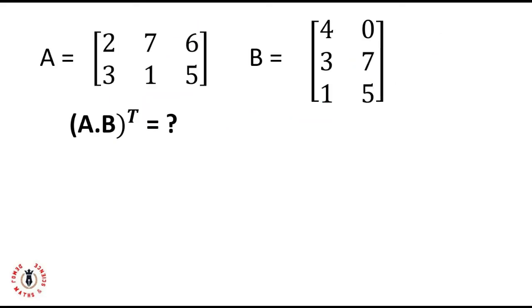Let's take this example. For this question, I have to transpose the product of A and B. First, let's find the product of A and B. Matrix A is a 2 by 3 matrix and matrix B is a 3 by 2 matrix. These two matrices can multiply each other because the number of columns in matrix A is the same as the number of rows in matrix B, and these two matrices will yield a 2 by 2 matrix.